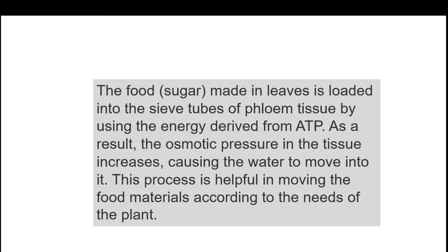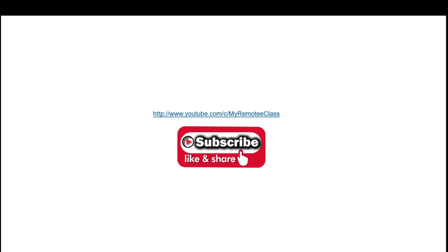The food made in leaves is loaded into the sieve tubes of phloem tissue using energy derived from ATP. As a result, the osmotic pressure in the tissue increases, causing water to move into it. This process helps in moving food materials according to the needs of the plant. I hope you have understood plant transportation. If you have any queries, do comment in the comment section — I shall definitely reply. If you liked my video, please like, comment, share, and subscribe. Thank you.